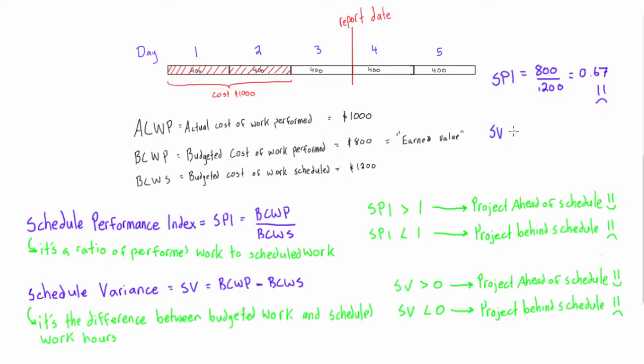Schedule variance - this is the other way to check. We have BCWP minus BCWS, so we'd have 800 minus 1200. This is going to give us a value of negative 400.